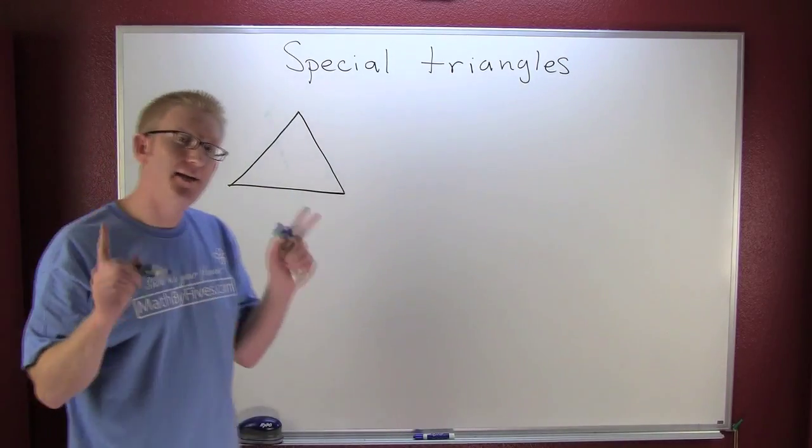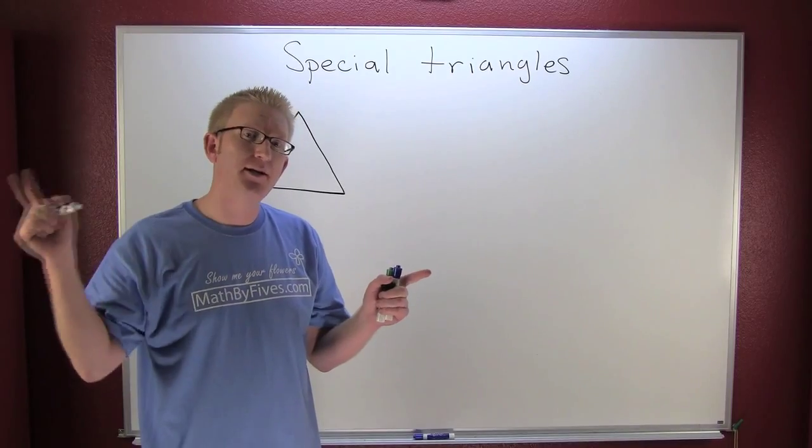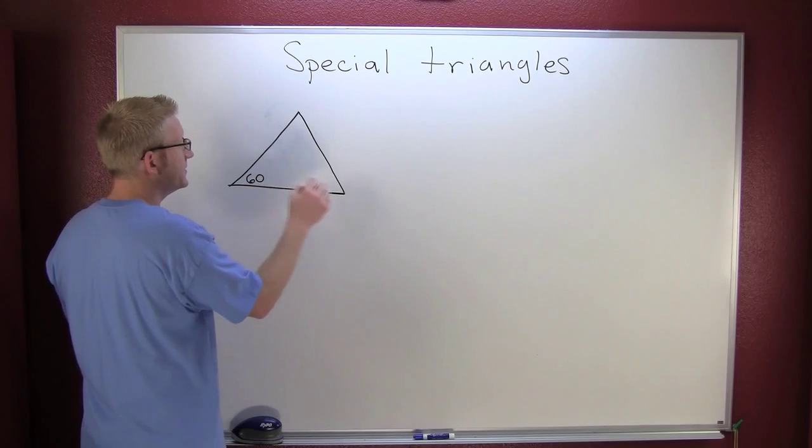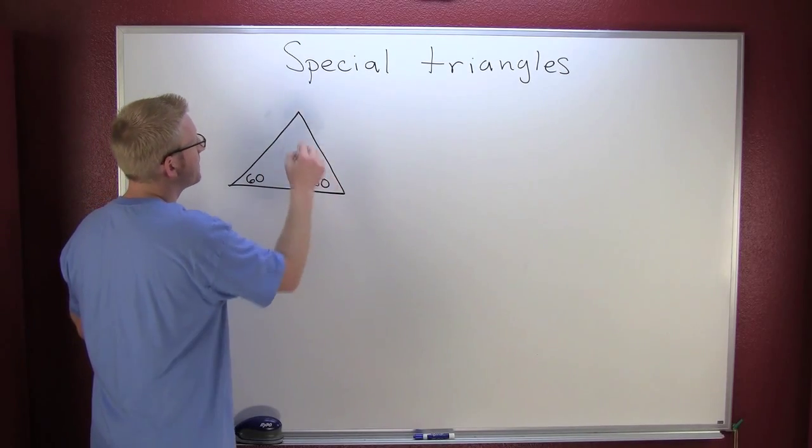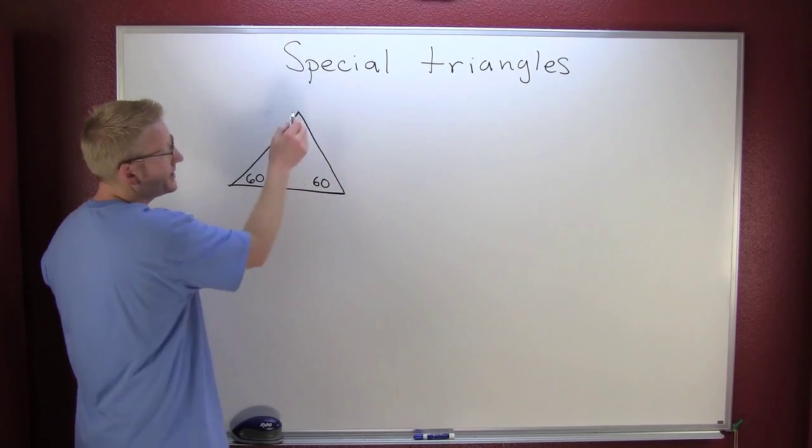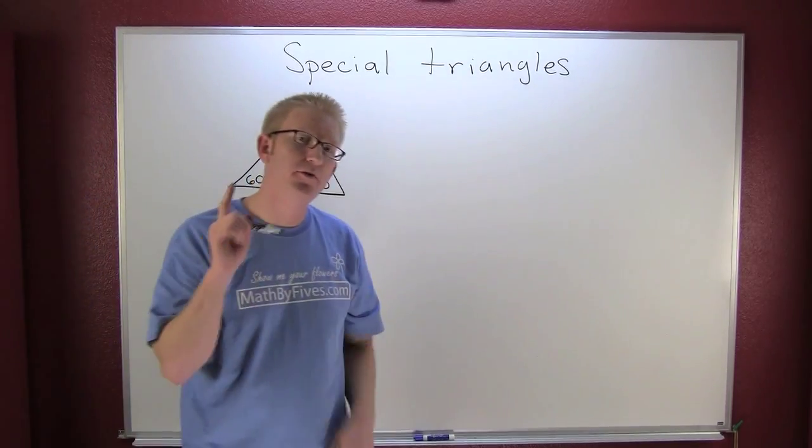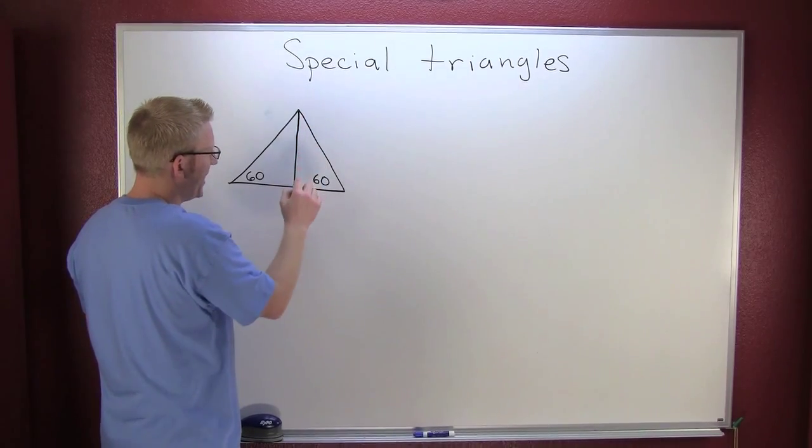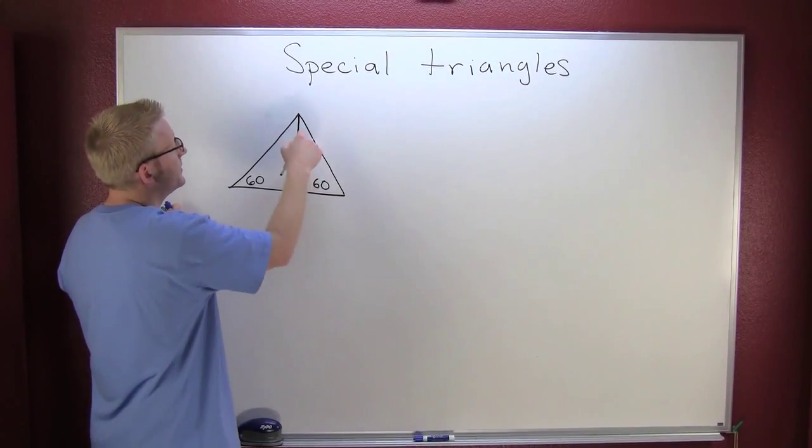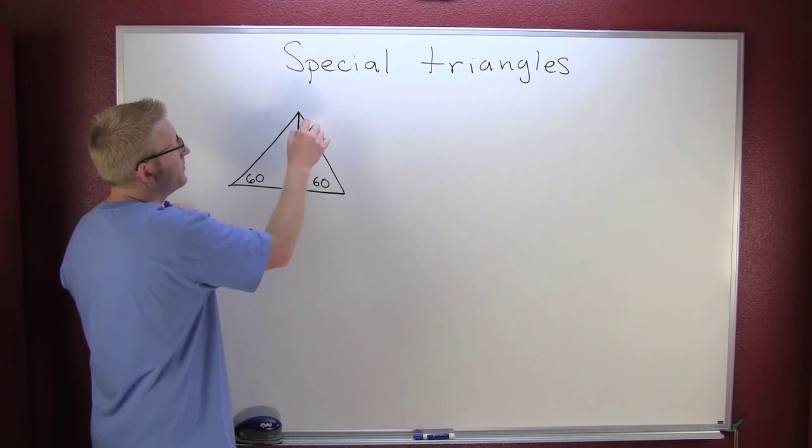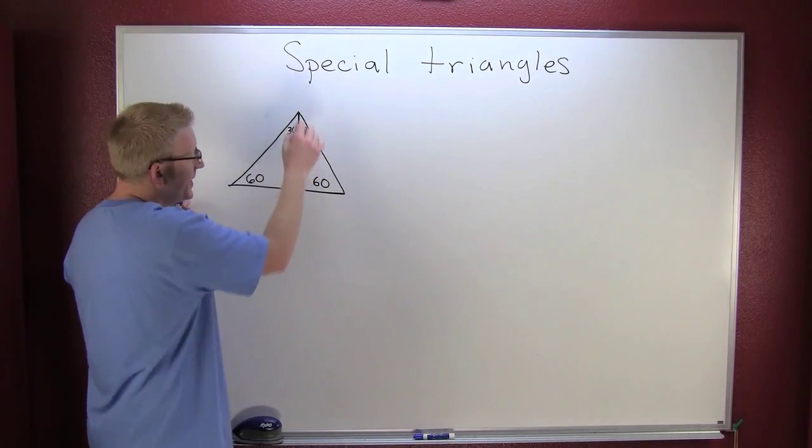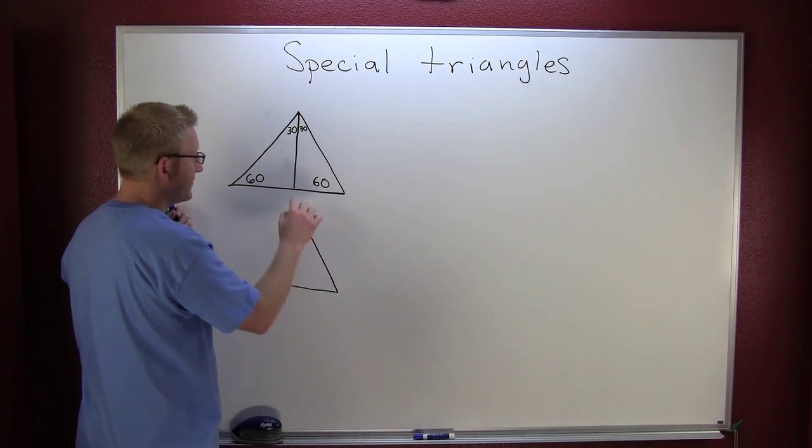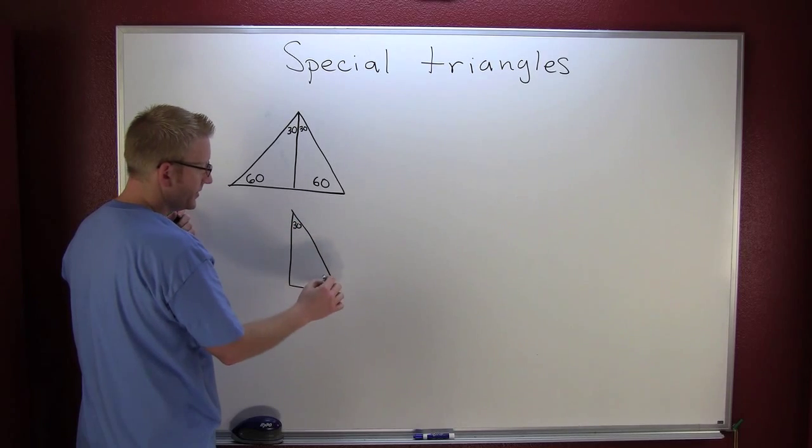If the sum of the interior angles add up to be 180 and they all have to be the same, then 180 by 3 is 60. So all of these are 60 degrees. What I want to do is find the altitude. The altitude has bisected that angle, both of these are 30.